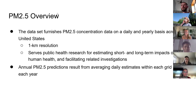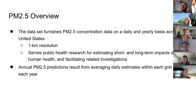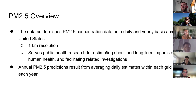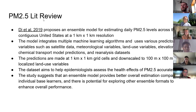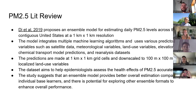I'll give a small PM 2.5 overview. The dataset from CTAC is on a daily and yearly basis across the United States at a one-kilometer resolution, and it helps serve public health research for estimating short and long-term impacts on human health. Annual PM 2.5 predictions result from averaging failure estimates within each grid cell for each year. There's one literature review done on it by Dee et al., 2019, which proposes an example model for estimating daily PM 2.5 levels across the United States at a one-kilometer by one-kilometer resolution.